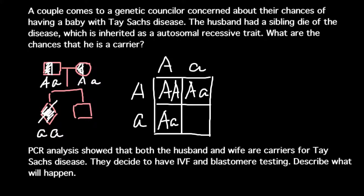When we build the Punnett square we can find genotypes, phenotypes, and their frequencies. Here we have one phenotypically and genotypically normal child ('AA'), two carriers ('Aa'), and one affected child ('aa'). The probability for this family to have an affected child is one quarter, or 25%, and the probability to have phenotypically normal children is three quarters. The probability that this person is a carrier would be two chances out of three. Some people make the mistake of thinking the probability is two out of four.